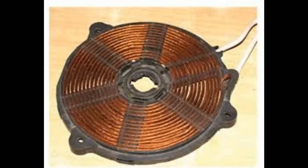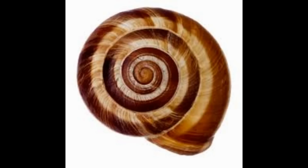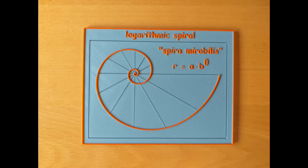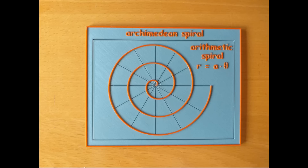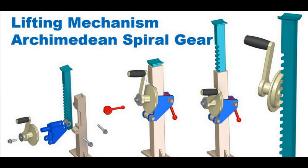Spirals are absolutely fascinating things and you find them all over the place. A Tesla coil is a spiral, a snail shell is a spiral — they're different forms of spiral but spirals nonetheless. They've been turned into gears and you find spiral gears in things like car jacks and table lifts. They are interesting to look at, interesting as a gear application, and the issue with them is drawing them.